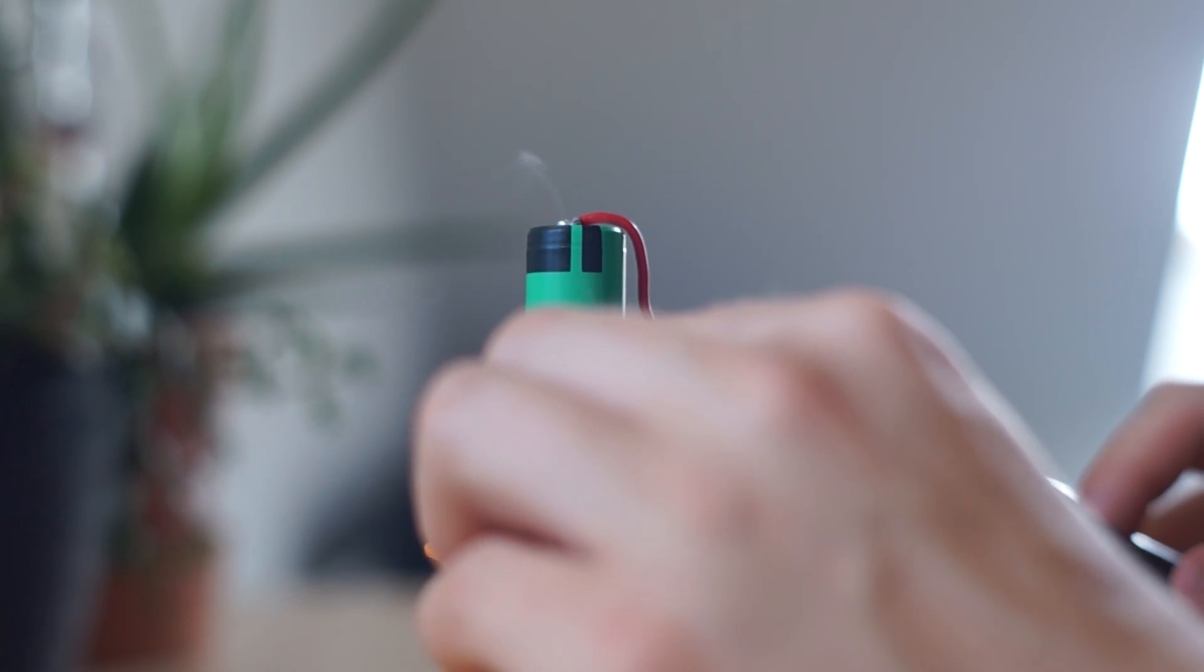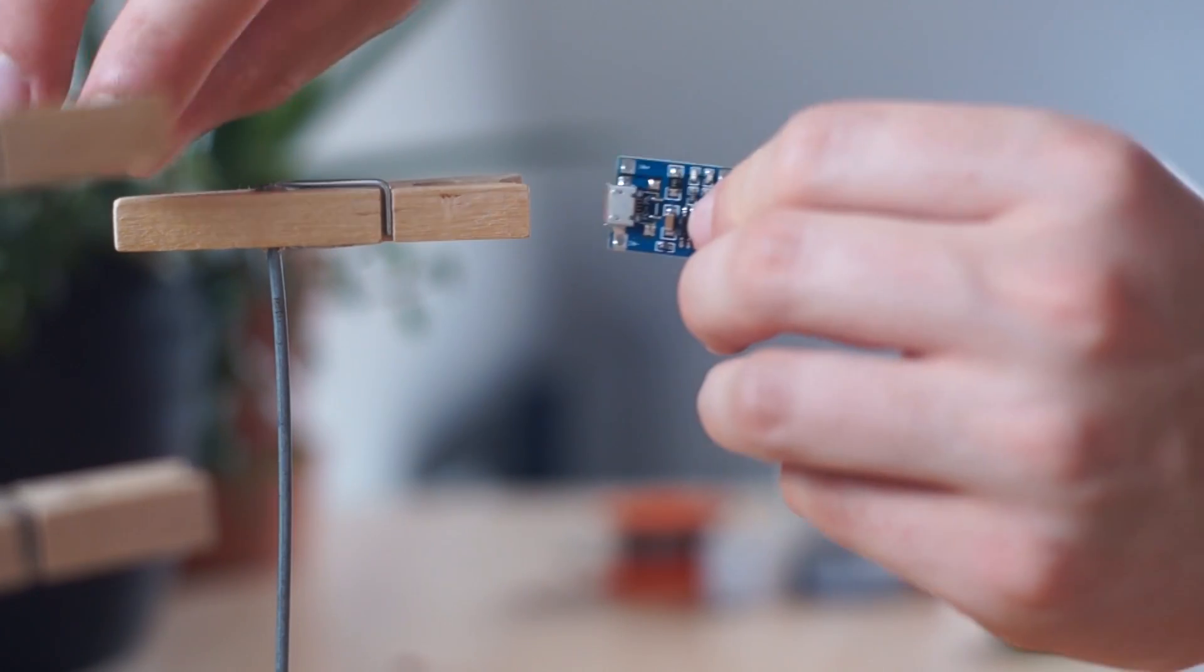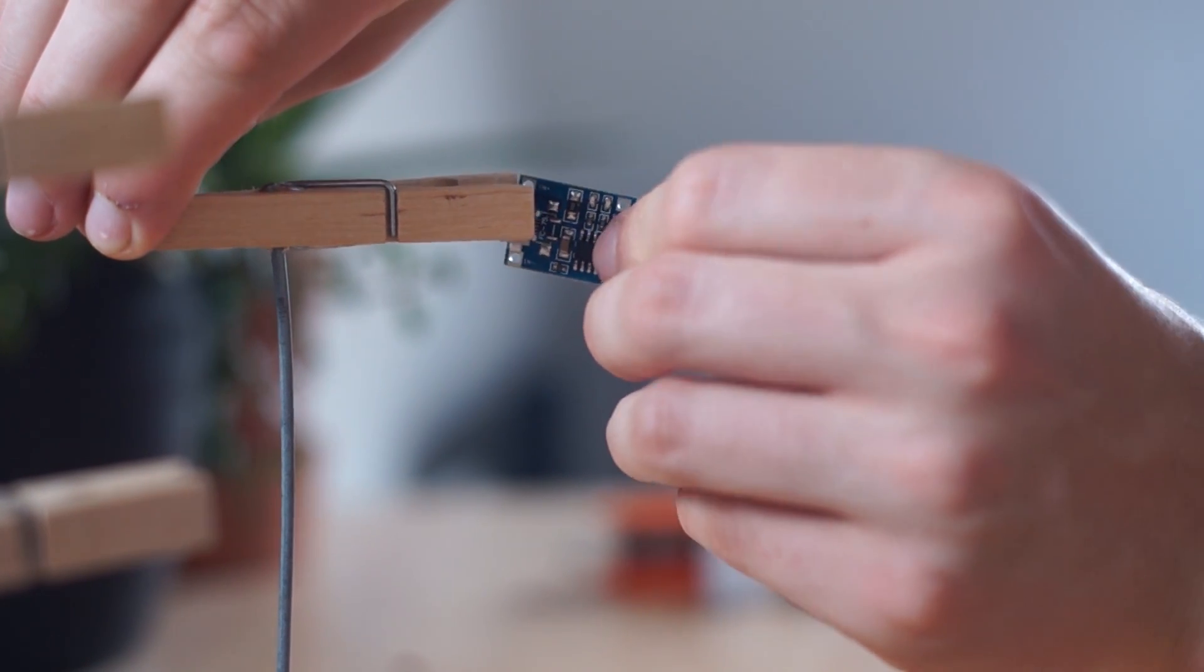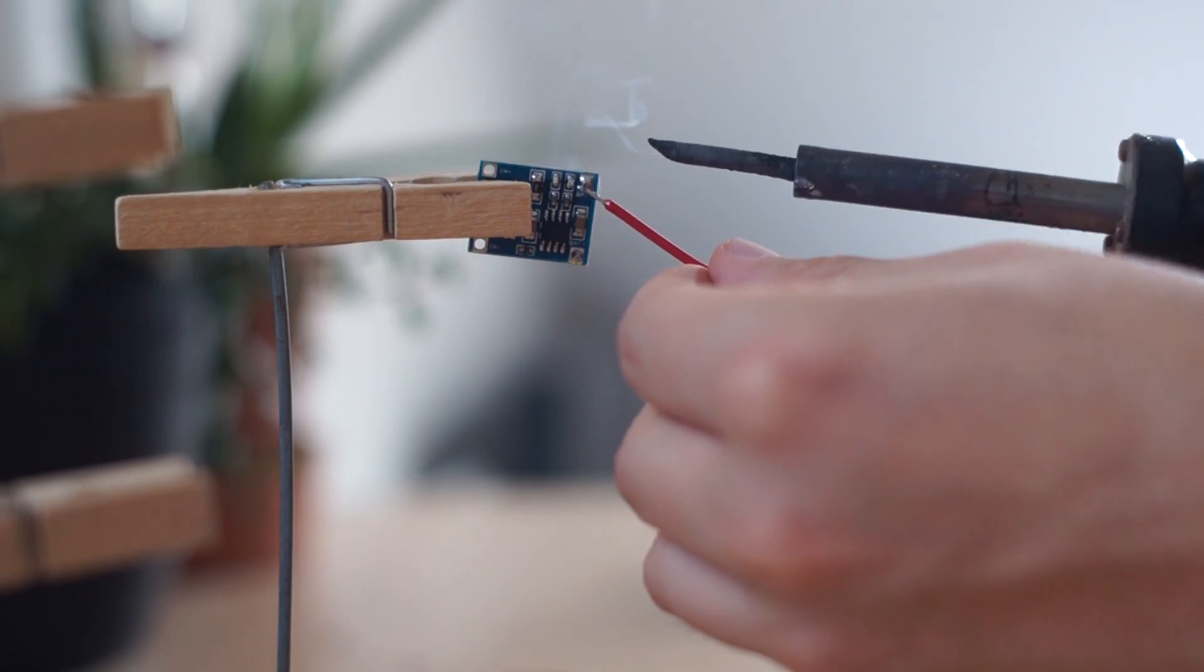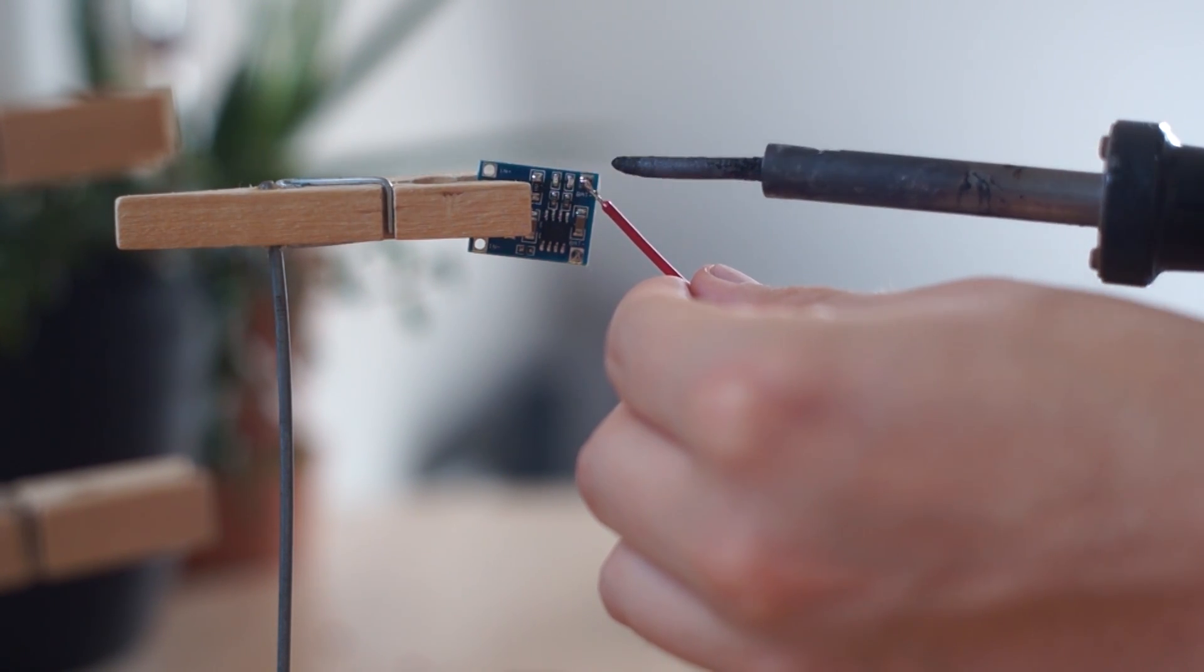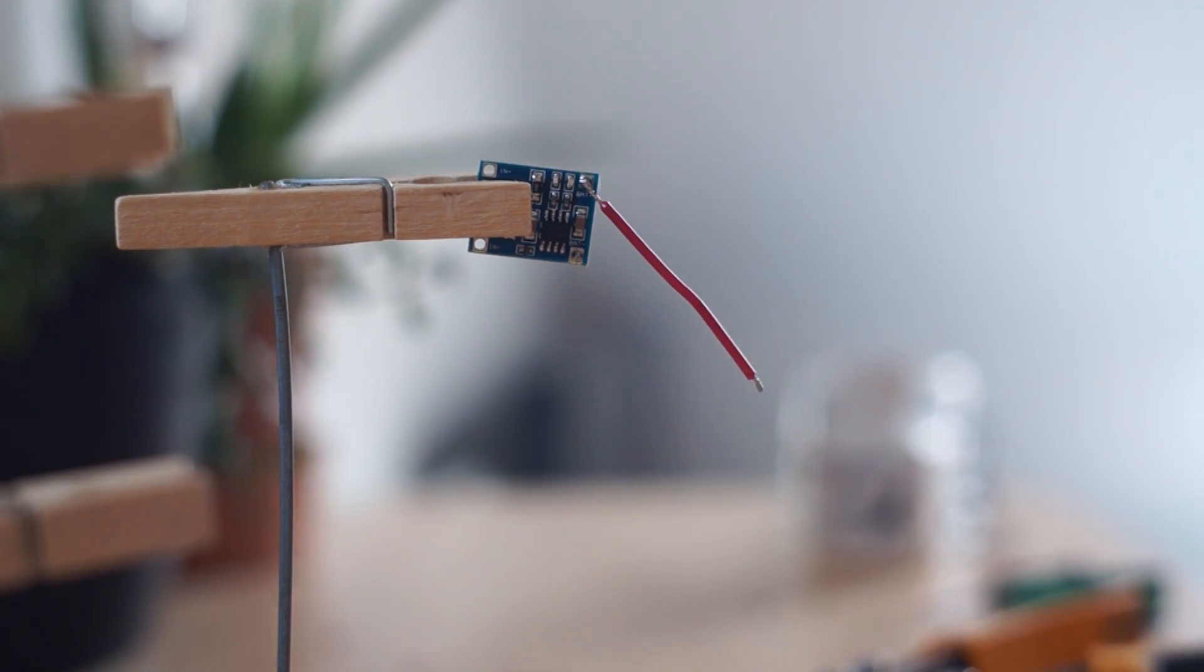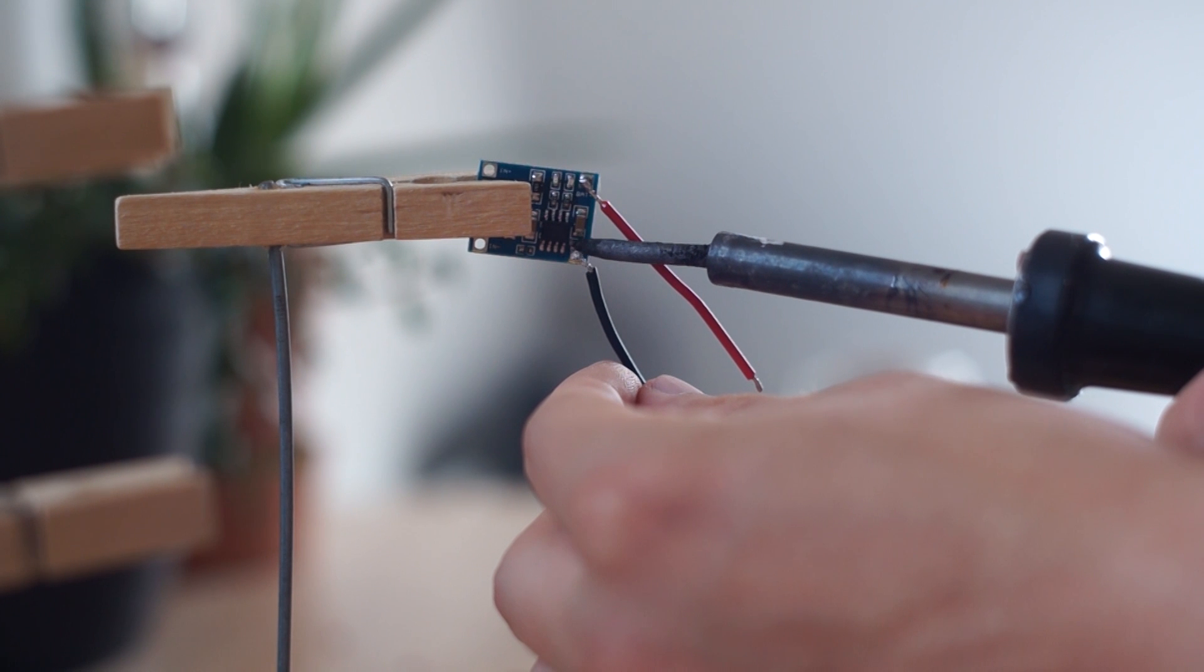Next up we're going to add two wires to the output of the battery protection circuit, so we're going to solder them onto P-positive and P-negative. Now we're going to leave the battery for a minute and move onto the battery charging board, so we're going to solder on two wires to the battery positive and battery negative terminals on the board, and then charging will take place through the micro USB slot at the front of the board.